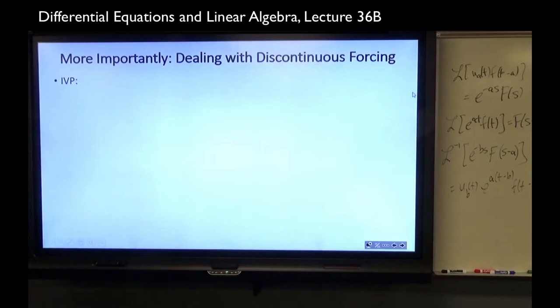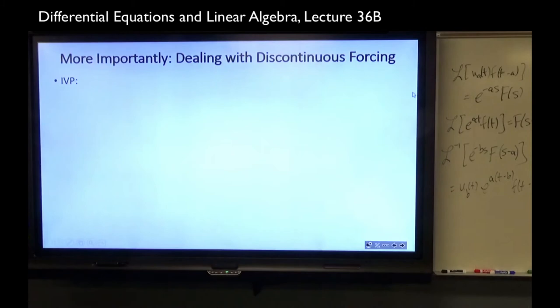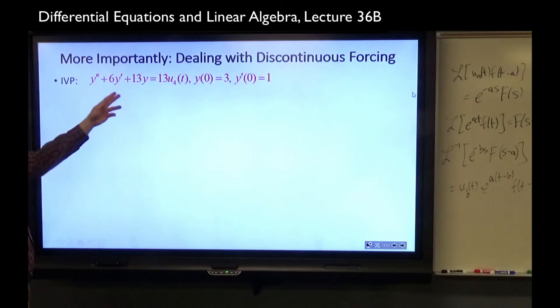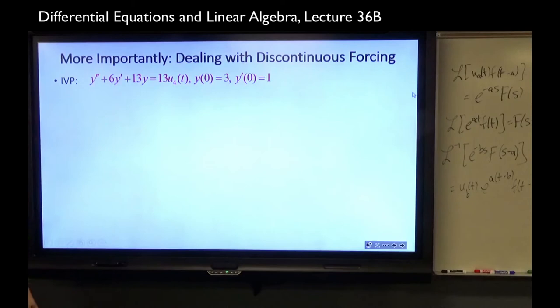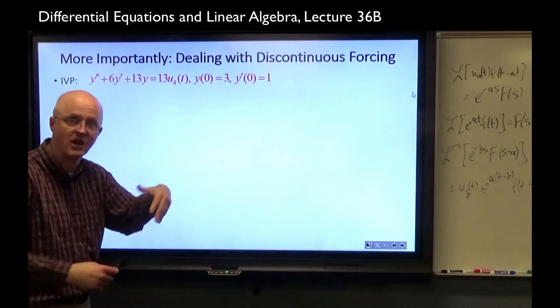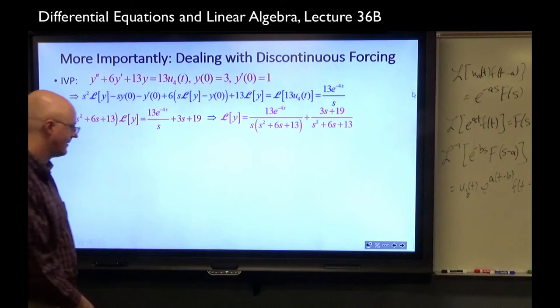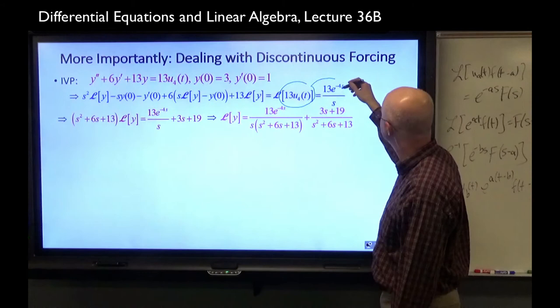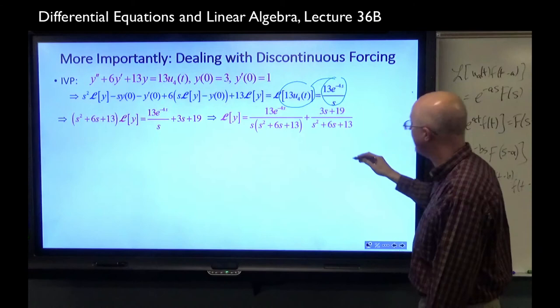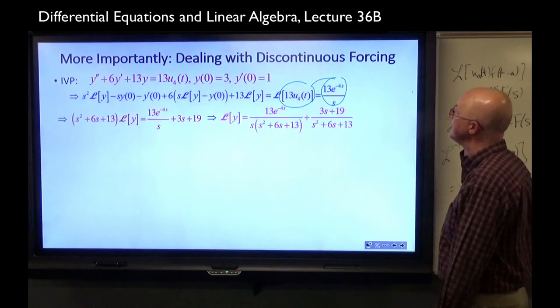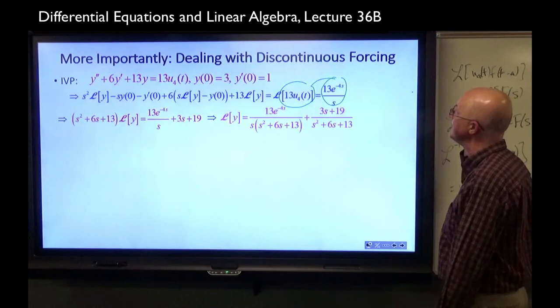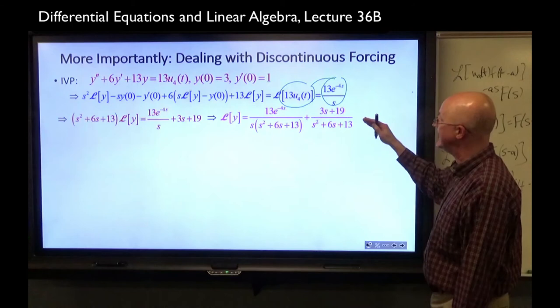More importantly, dealing with discontinuous forcing. Let's now make the right-hand side a unit step function times 13, with non-zero initial conditions — making it harder. The equation is almost the same but with the coefficient changed to 6. Once again, take the Laplace transform on both sides, use linearity, use how the Laplace transform affects derivatives, plug in the initial conditions, and solve for L{y}. We also need to recall that the Laplace transform of u_4(t) is e^{−4s}/s; we carry the 13 along.